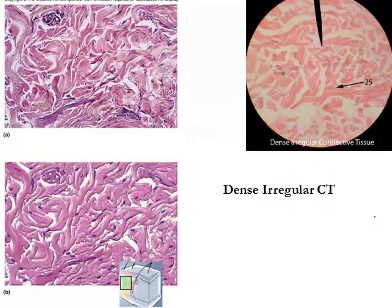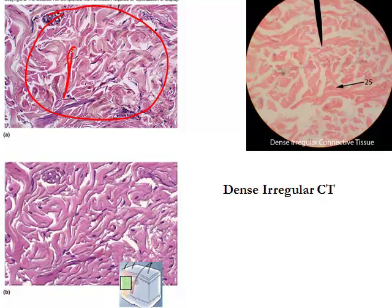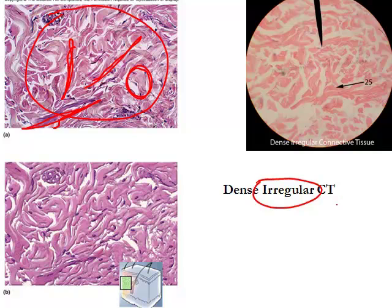Some parts of our body, like the dermis of our skin, have to resist forces in all different directions — sometimes stretching, sometimes being pulled on, sometimes being pushed on. So in dense irregular connective tissue you get densely packed collagen fibers running in many different directions. Looking at the micrograph, some fibers are traveling this way, some are going up, some are going straight across, and some we're looking at in cross-section coming right at us. That's why this is called dense irregular connective tissue, found in places where forces must be resisted in multiple directions.